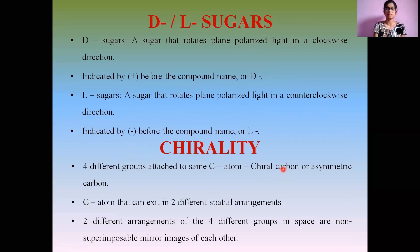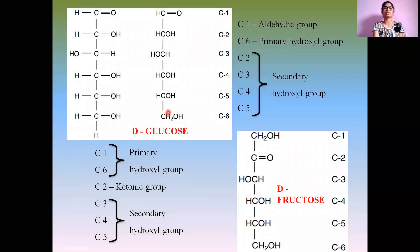Chirality is one of the important phenomena exhibited by sugars. When four different groups are attached to the same carbon atom, that carbon atom is called chiral carbon or asymmetric carbon. For example, looking at D-glucose, the C2, C3, C4, and C5 secondary hydroxyl groups have four different groups attached to the carbon atoms. At C2, one bond is attached to the aldehyde group, another to the OH group, another to the rest of the chain, and the other bond is for hydrogen.